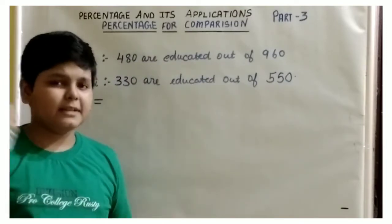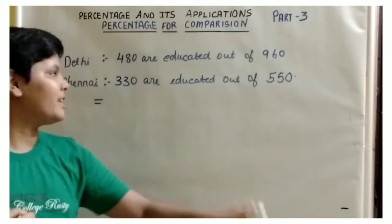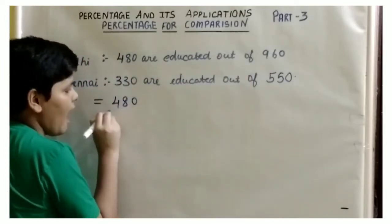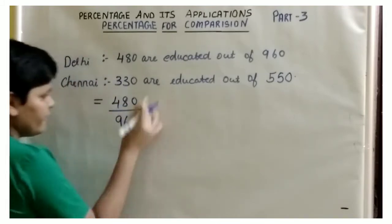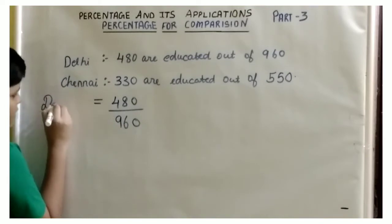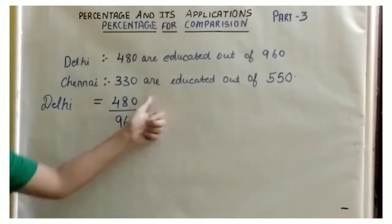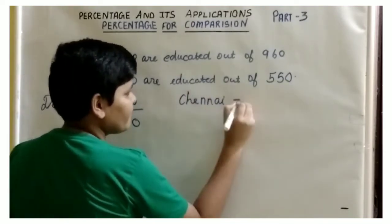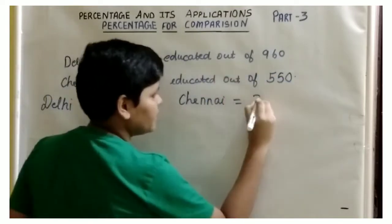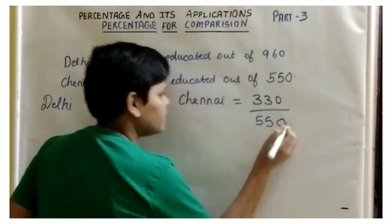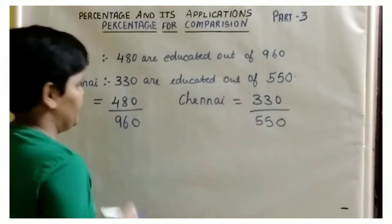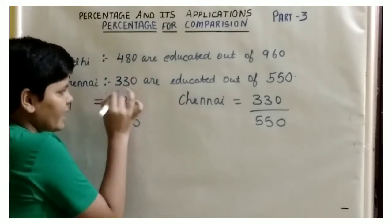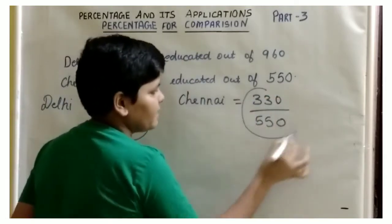For Delhi, 480 are educated out of 960, so we represent that as 480 by 960. And for Chennai, we have 330 out of 550, which is 330 by 550. For percentage comparison, we have to compare 480 by 960 with 330 by 550.